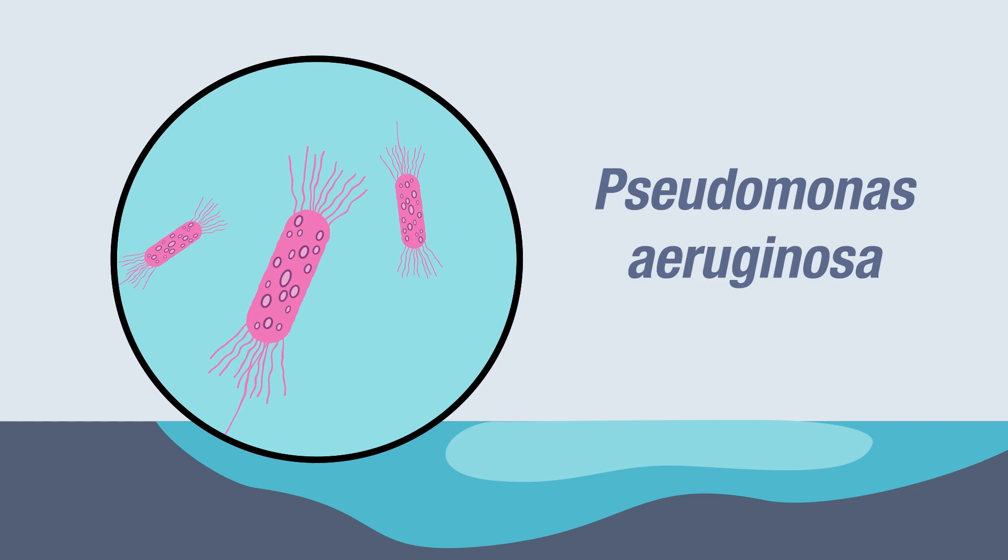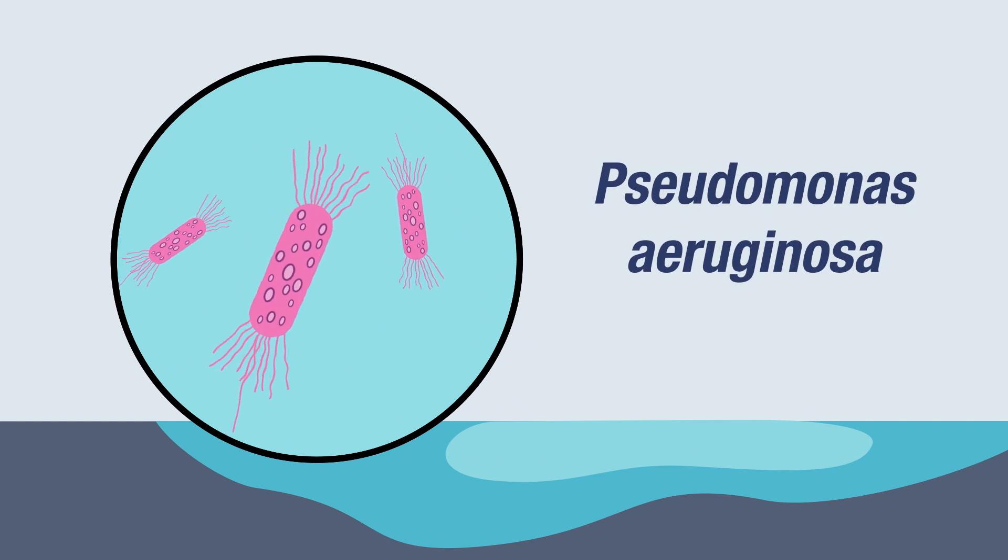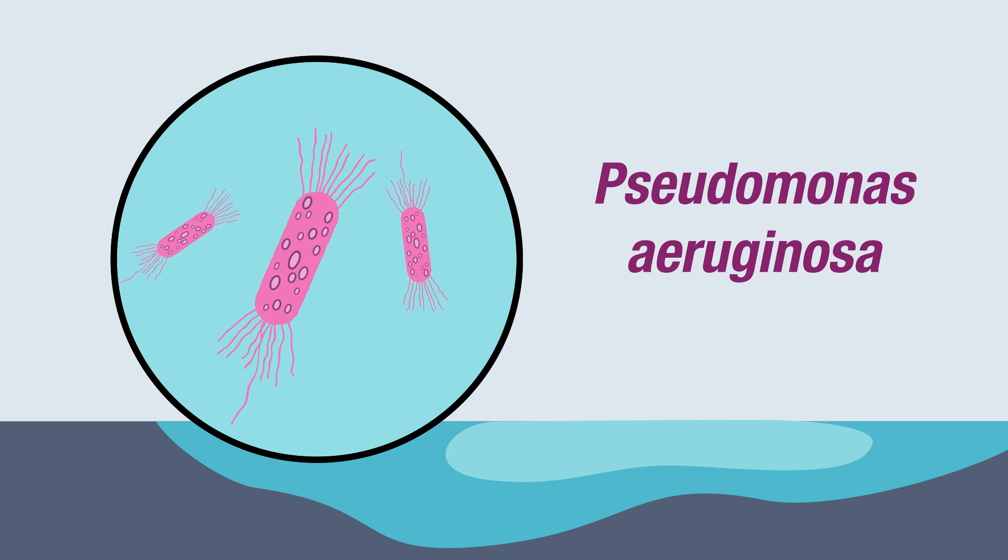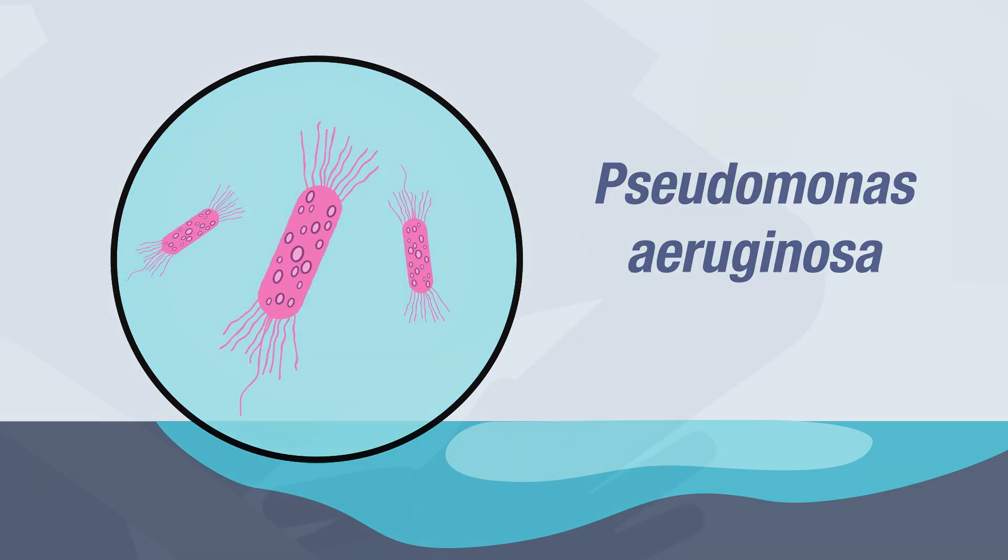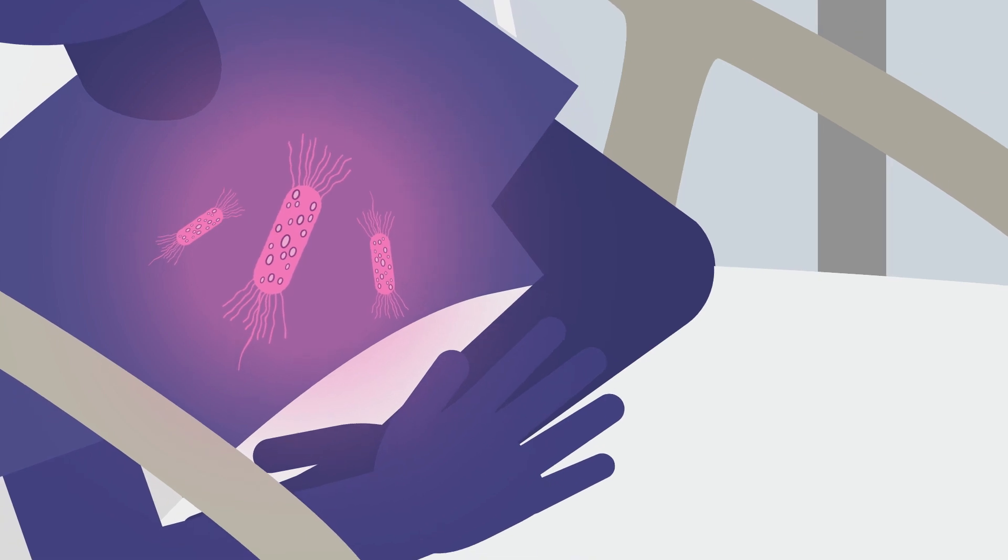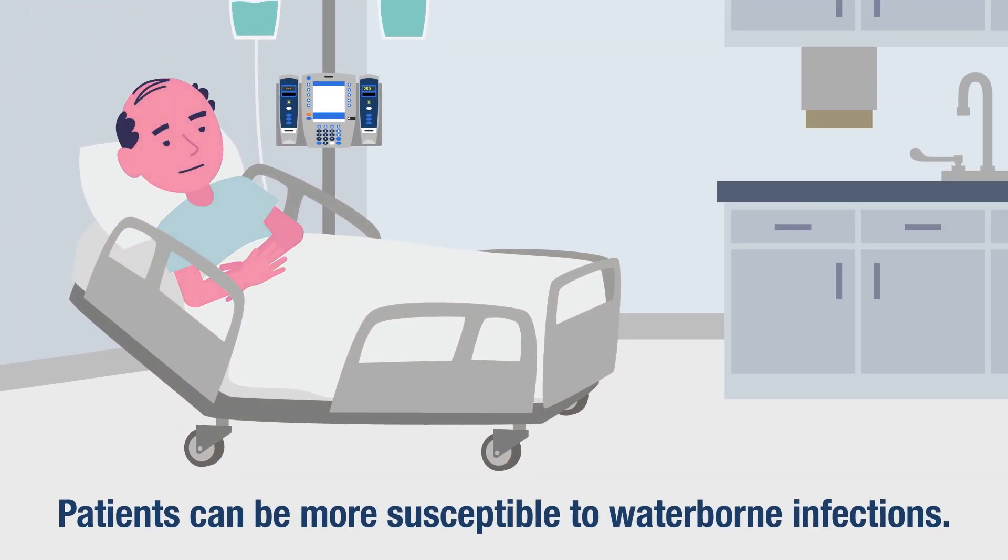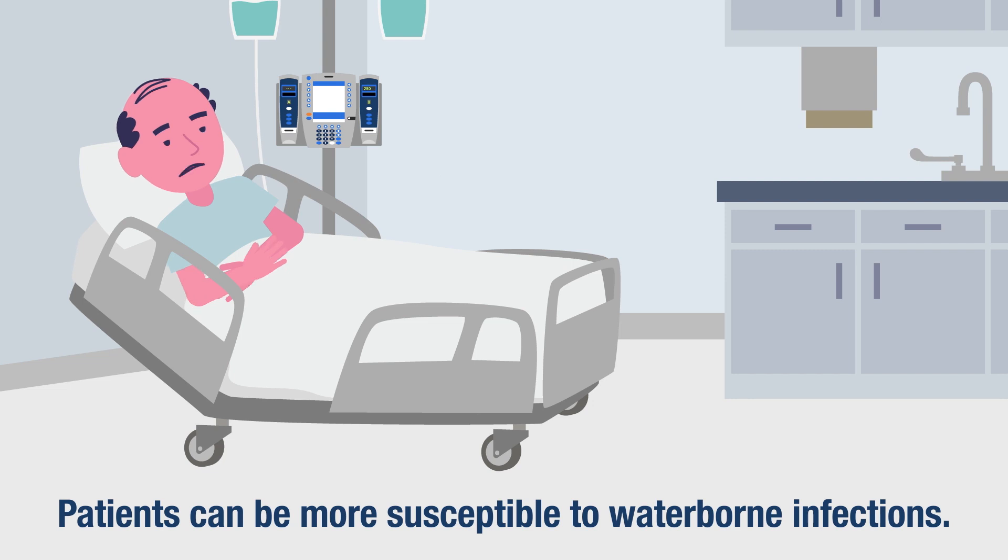Here's an example. One of the leading causes of health care associated infections is a waterborne bacteria called Pseudomonas aeruginosa. It can cause infections in various parts of the body with high morbidity and mortality rates due to its strong antibiotic resistant properties. People with weakened immune systems, already sick, or undergoing surgery are particularly susceptible.